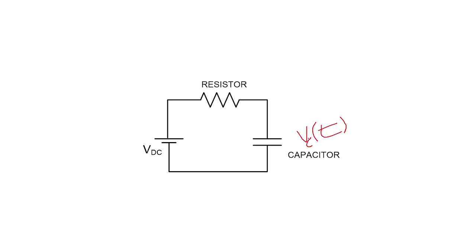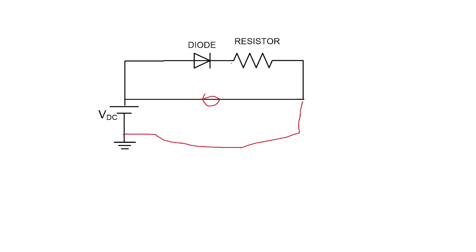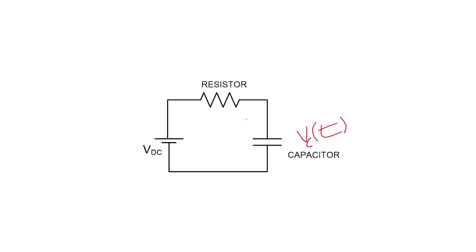He asked about the output voltage waveform of V_C(t) across the capacitor. He also asked about waveforms across the resistor and for the diode when it conducts. Then he started adding more capacitance to the circuit and asked: at what time will both capacitors be fully charged, and what is the effect on charging time compared to before?